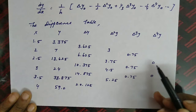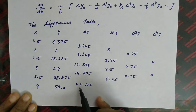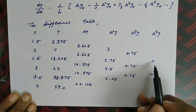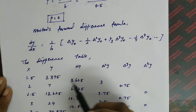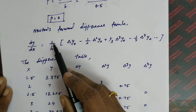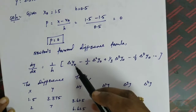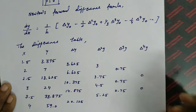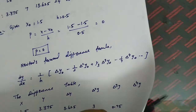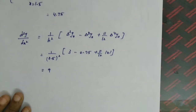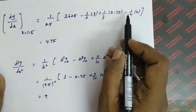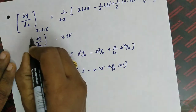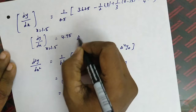Using forward difference, we take all beginning values from the difference table. Substituting into the formula: dy/dx = (1/0.5)[3.625 minus (1/2)(3) plus (1/3)(0.75) minus (1/4)(0)]. After simplifying all these values, dy/dx at x equal to 1.5 is 4.75.